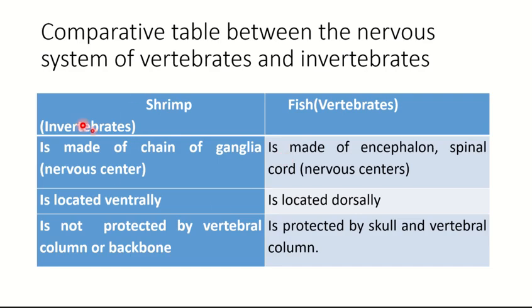Now we will see a comparative table between the nervous system in vertebrates and invertebrates, using shrimp and fish as examples. In invertebrates, the nervous system is made up of a chain of ganglia, while in vertebrates it is made up of a brain and spinal cord. In invertebrates it is located ventrally, while in vertebrates it is located dorsally. The nervous system of invertebrates is not protected by a backbone, while in vertebrates it is protected by a skull and a vertebral column.